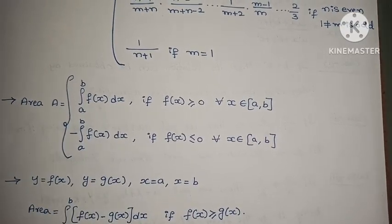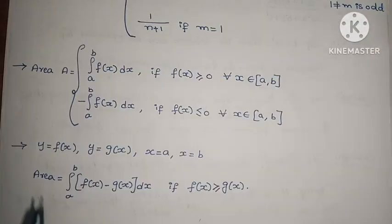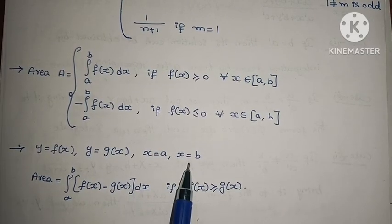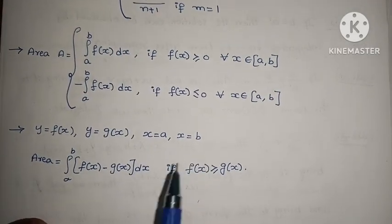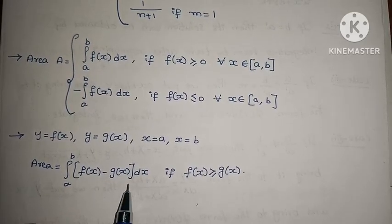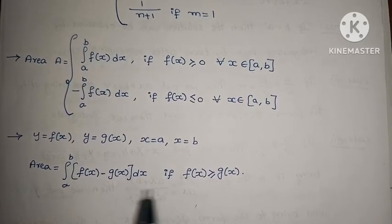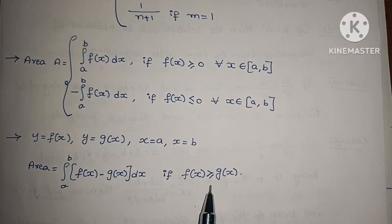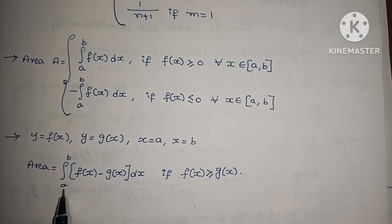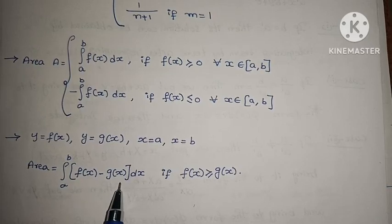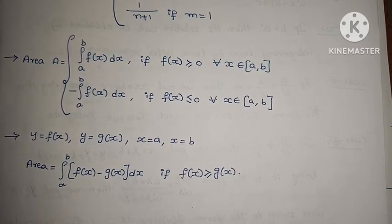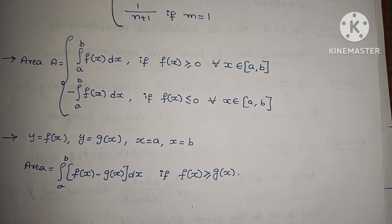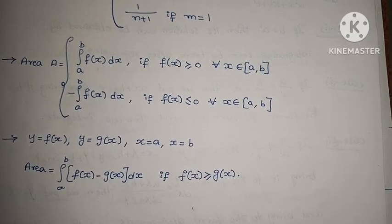Area between curves: Integral a to b of [f(x) minus g(x)] dx, where f(x) is greater than or equal to g(x). If f(x) is less than g(x), then use integral a to b of [g(x) minus f(x)] dx. With this, the definite integrals chapter important formulas are complete.